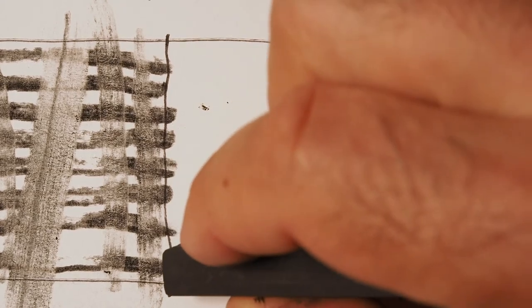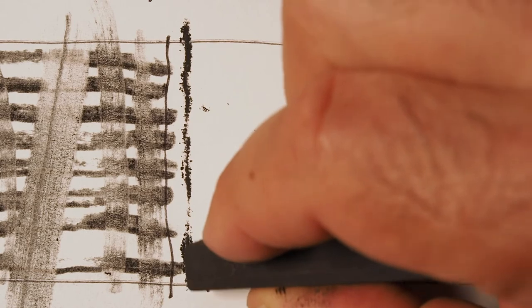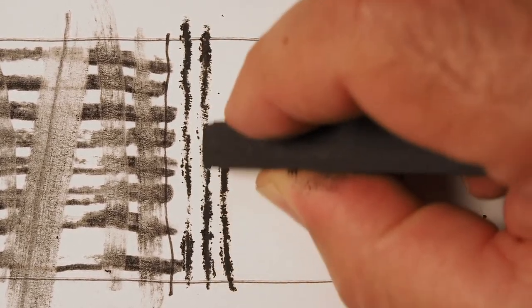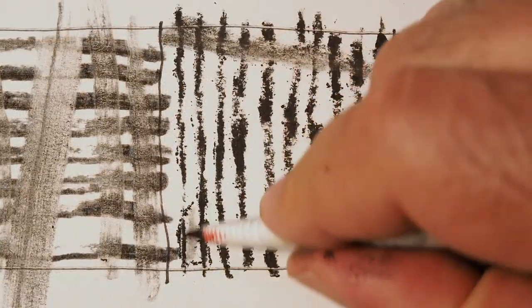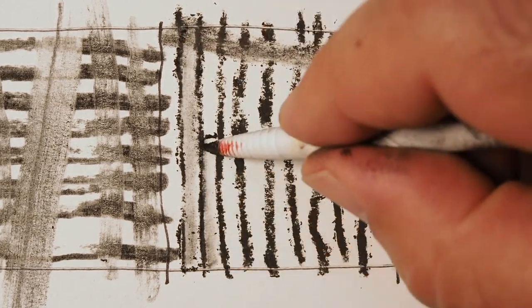Compressed charcoal gets all over the place. And you might even want to put another piece of paper underneath your drawing paper to catch the mess. It makes a very strong black that can be smudged. Here what I'm doing is just smudging one side of the line.